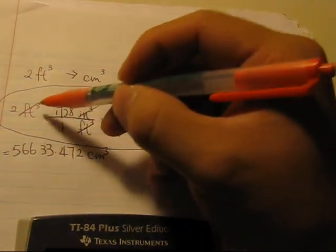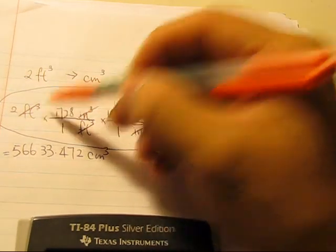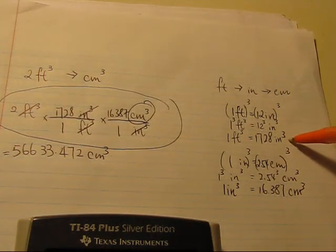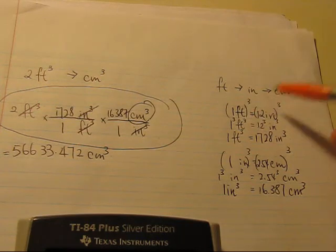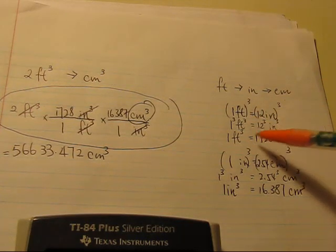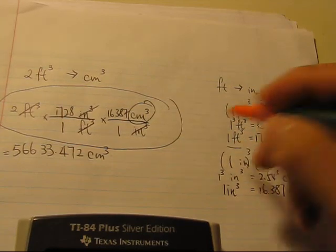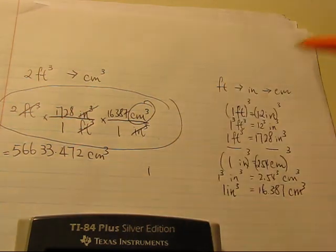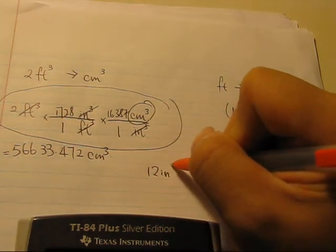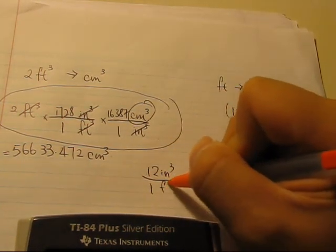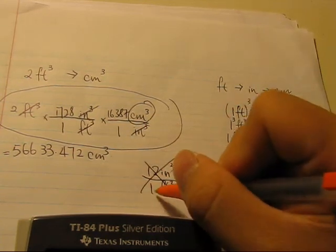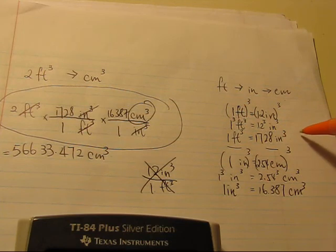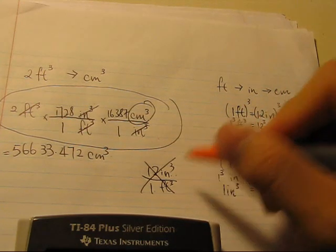So remember, whenever you have something raised to some power, you go to the simple relationship, and then you raise to the specific power on both sides, and you get the number. Okay, do not do this. Do not write something like this, because this is not true. One cubic foot is equal to seventeen twenty-eight cubic inches. Do not make this type of mistake.